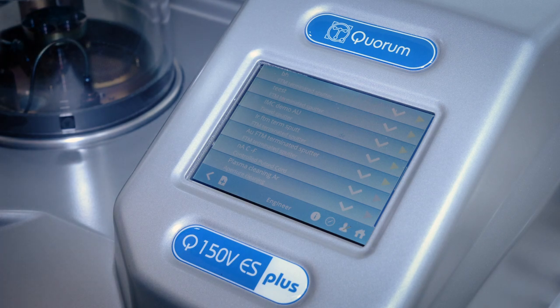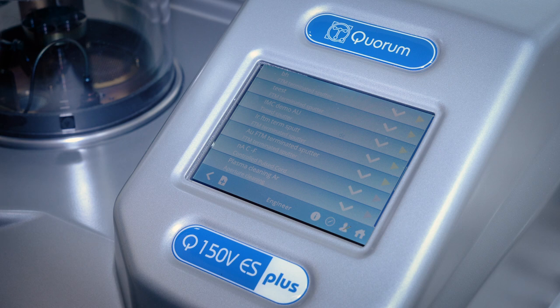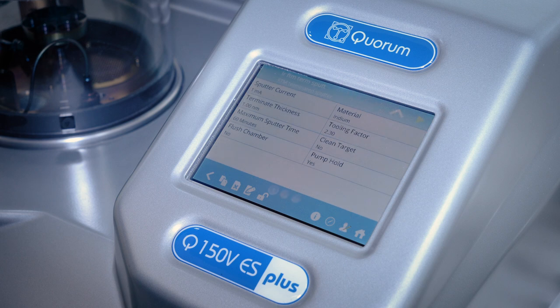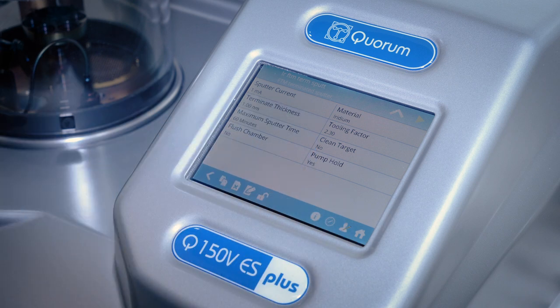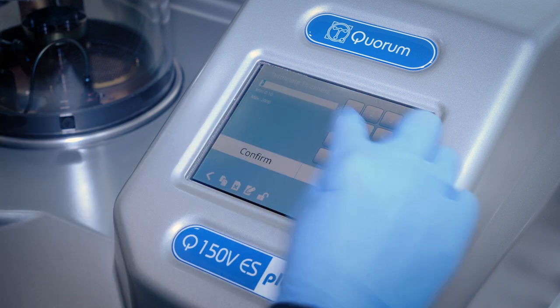To run a coating process, you need to simply choose an appropriate recipe by pressing the blue arrow. This opens the recipe parameter window where we can edit conditions or activate, deactivate actions like target cleaning or stage rotation. The parameters of coating are predefined, but they can be changed by typing in the desired values.